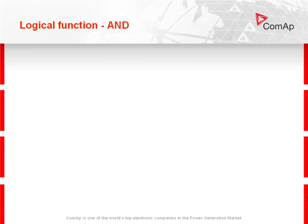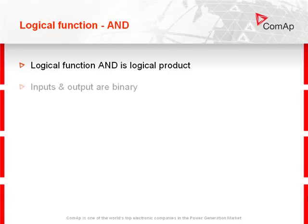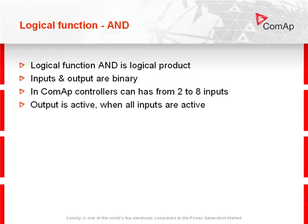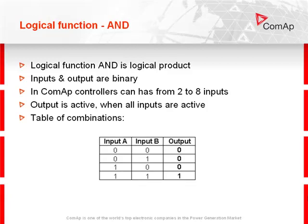Logical function AND is a logical product. Inputs and output are binary. In COMAP controllers it can have from 2 to 8 inputs. Output is active when all inputs are active. In the table of combinations you can see that only all active inputs cause an active output.